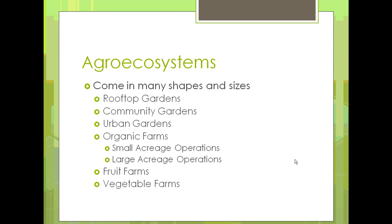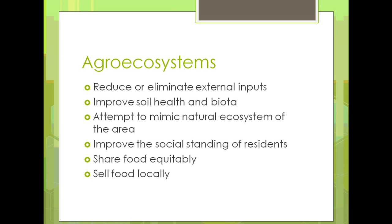By way of definition — we'll get into more detail in later units — what's the goal with agroecosystems? Reducing or eliminating external inputs. That's a fancy way of saying we don't want to irrigate any more than we have to, and we don't want to put any fertilizer on if we can do something to make the soil fertile naturally. We want to improve the soil health and biota, and grow things that will replenish what we're taking out of the soil.